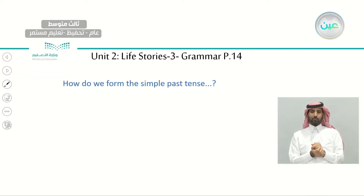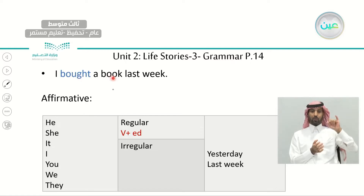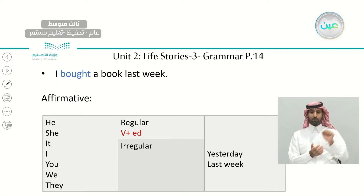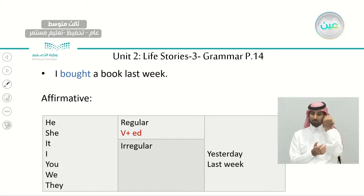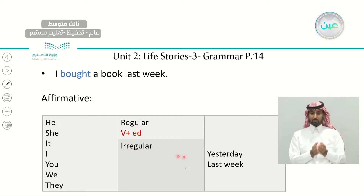How do we form the simple past tense in an affirmative sentence? Look at the example: 'I bought a book last week.' This is not a negative, not a question — it is an affirmative sentence. We have any subject — he, she, it, I, you, we, they, or names like Ahmed, Mona, Mohammed, Fatma. We add to it the verb, either with '-ed' or as an irregular verb. Then we complete the sentence. This is how we form a simple affirmative sentence.